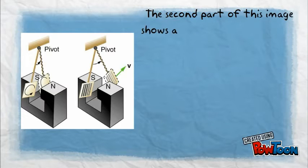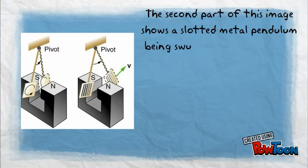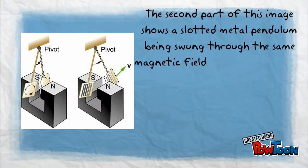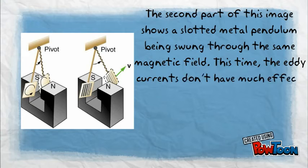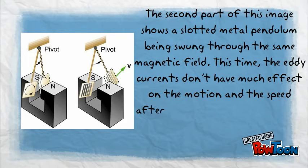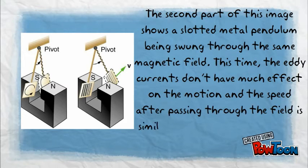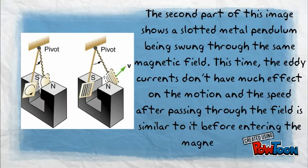The second part of this image shows a slotted metal pendulum being swung through the same magnetic field. This time the eddy currents don't have much effect on the motion, and the speed after passing through the field is similar to before entering the magnetic field.